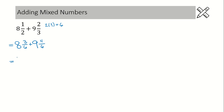We start with the whole numbers first: eight plus nine is 17. Next we add the fractions. We know that we don't add the denominators, so let's write in a denominator of six and then just add up those numerators — three plus four is seven. Now we are not done. We have this mixed number, but the fraction part is improper — seven over six is not allowed, so we need to use a couple of steps to change seven over six.